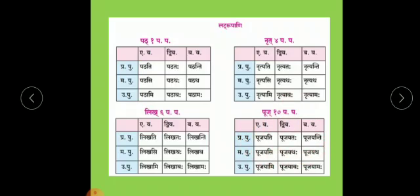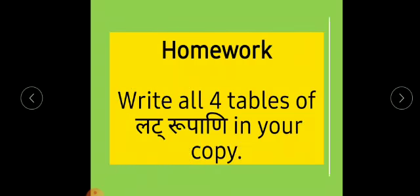Children, I hope you have understood the Bhasha Sutram very easily. The main important part of this Bhasha Sutram is how to form a verb using different types of endings. We have studied the Vartamankal — present tense endings of Parasmaipat roots. Your homework is to write all four tables of Latrupani in your copy from page number 16, and also write the endings table from page number 15.